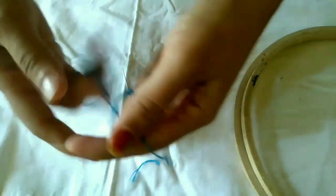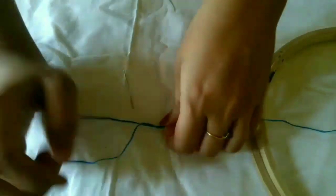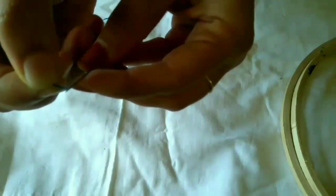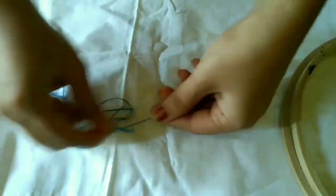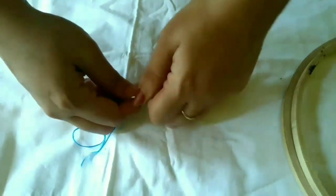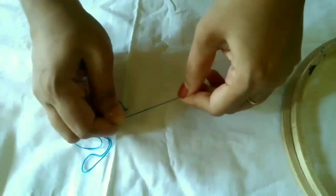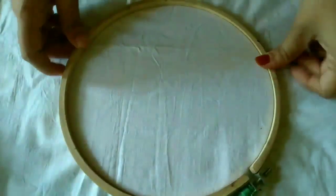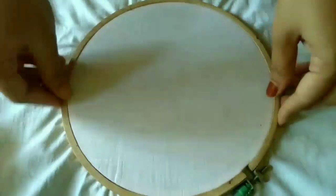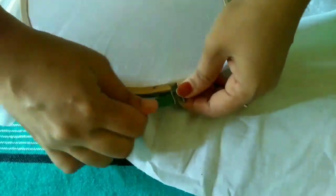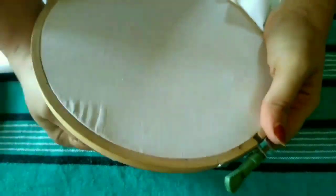For hand embroidery, I use three strands to separate the pieces. The frame will fit the material. Put it on the frame, and put the screw on top. First, put it on the loose side, then put it on the tight side. I am going to put it tight.